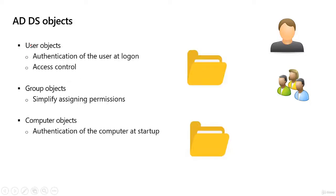The three most common objects we're going to have in Active Directory will be user objects. Many people call this a user account, but what the user object or account actually does — one, it provides authentication for the user login. Let's say Bob Ross — he has a username and password. Anytime he attempts to authenticate, he has to type in the username and password. We assume only Bob knows the password, so we can verify that Bob is who he actually says he is.